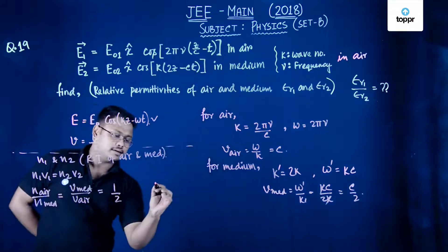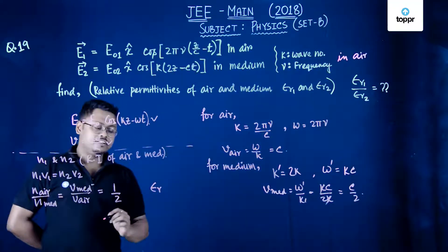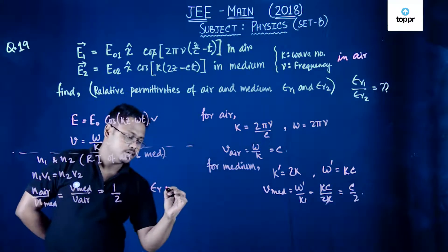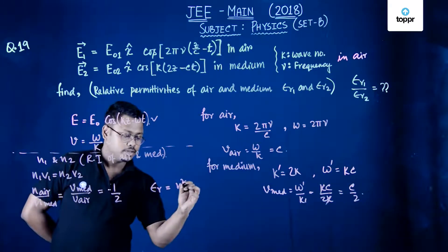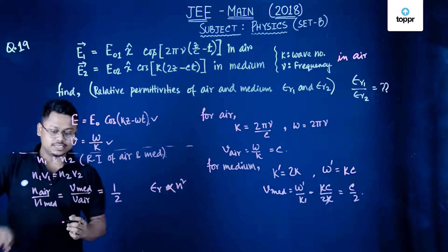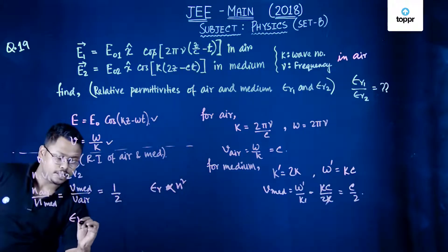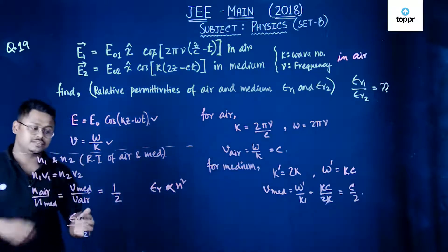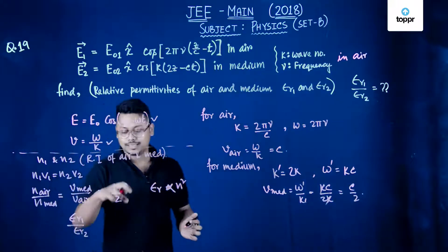And we know that relative permittivity is equals to, is directly proportional to n square. So for this if I write E r1 upon E r2, epsilon r1 upon epsilon r2, we will just square this.